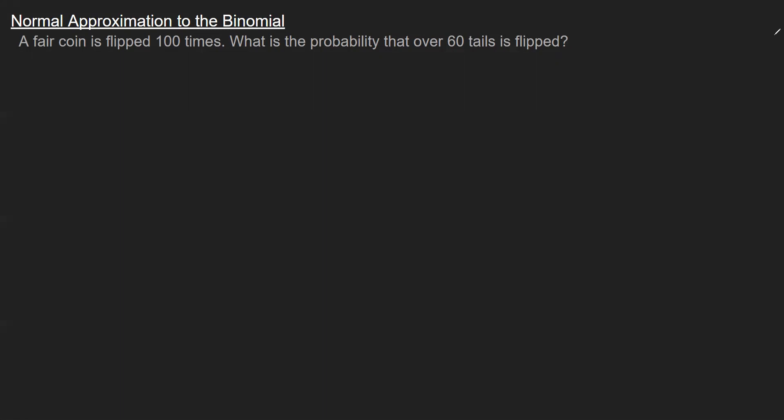So let's jump into an example here of a coin flip problem. These are binomials. The coin flip is one of the easiest examples to look at. In this problem, we're flipping a coin 100 times. We want the probability that over 60 tails is flipped. My outcome of interest is whether or not it lands on tails. I'm going to define a random variable here as the number of tails.